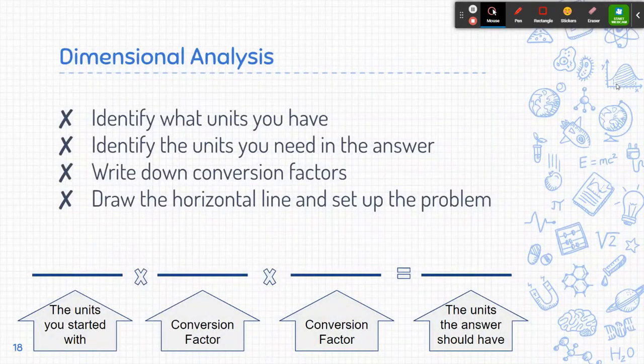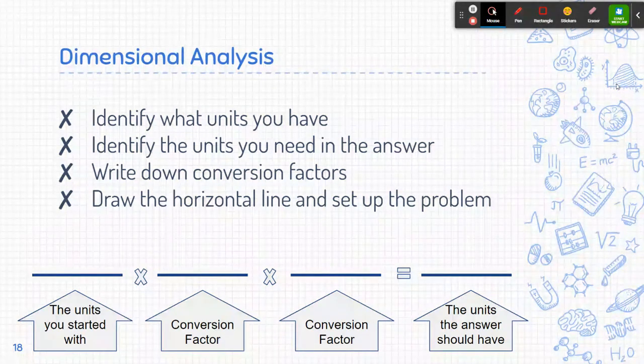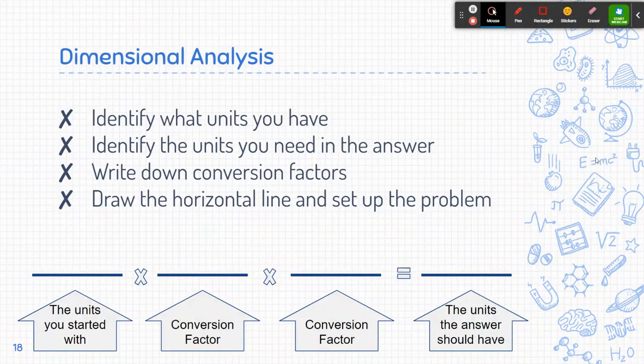When you're doing dimensional analysis you need to do four different things. You need to identify what units you have, what the units are that you need in the answer, you need to write down conversion factors, and you need to draw a horizontal line and set up the problem. So we're gonna go through this a little bit at a time.